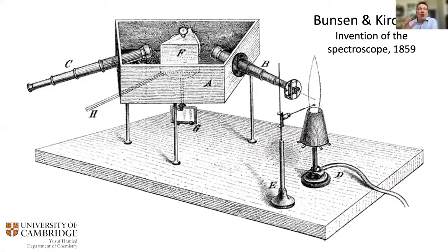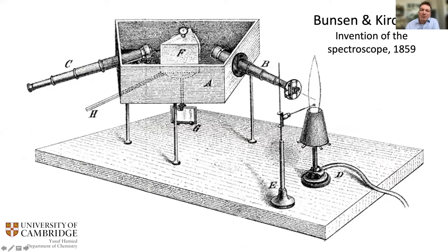The proper spectroscope as used in chemistry was invented by Bunsen and Kirchhoff in 1859. A substance to be investigated was introduced onto a platinum wire and held in the blue flame of the Bunsen burner — familiar from our earliest days in chemistry with flame tests, where sodium gives a beautiful yellow color and strontium a beautiful red.